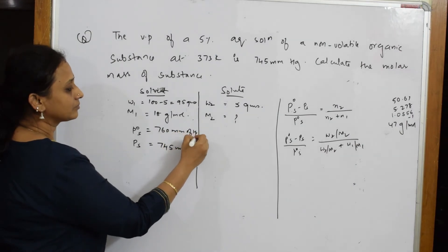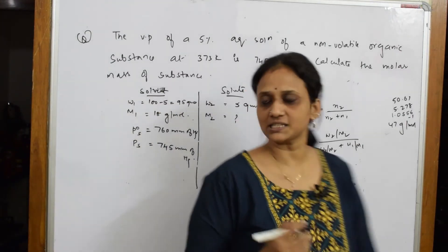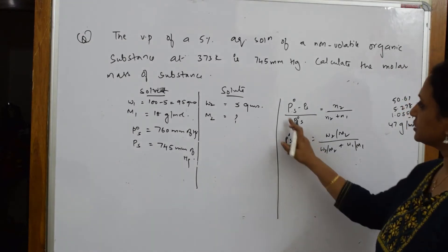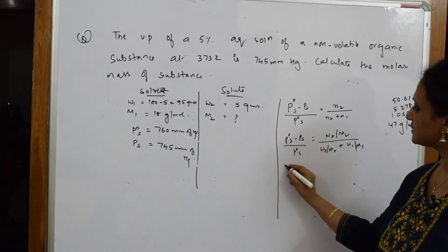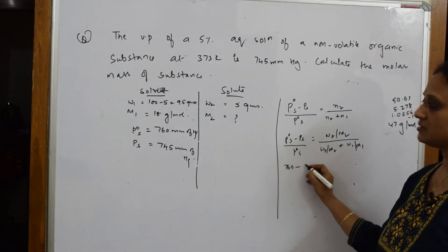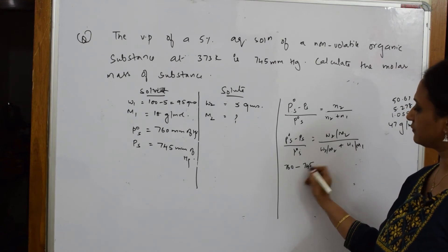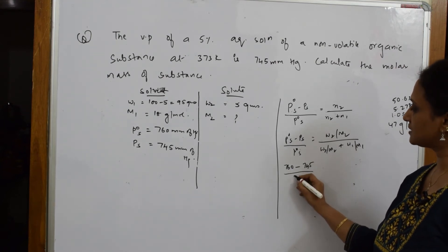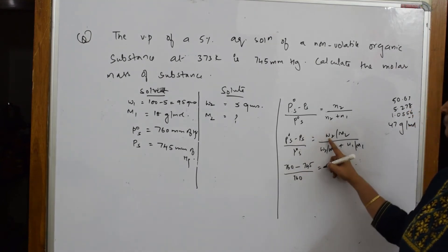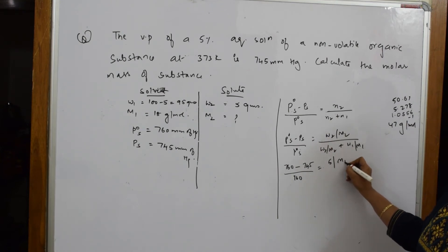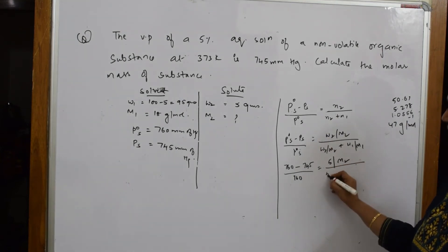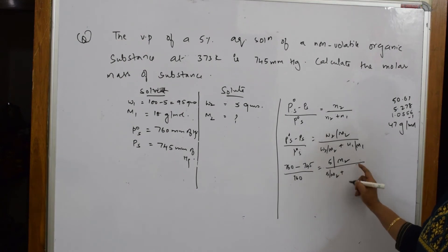p0s is the vapor pressure of the pure solvent, that is nothing but 760 mm of mercury. I've got all the data now. Substitute. When I have to substitute in this particular sum: p0s is 760 mm minus ps is 745 mm by p0s is 760, which is equal to w2 is 5, I have to find out m2.